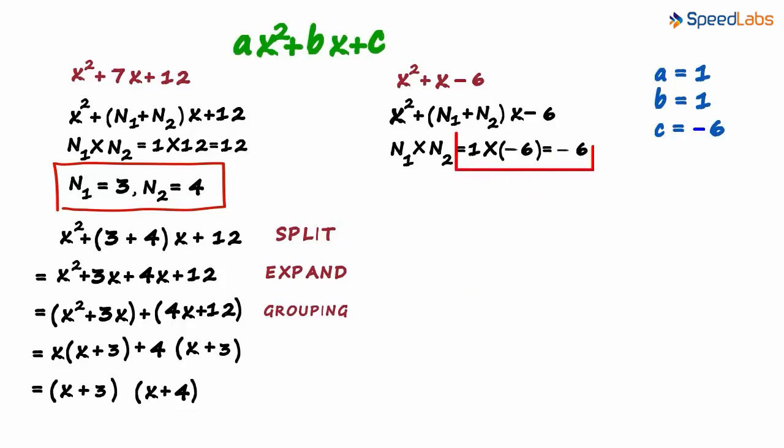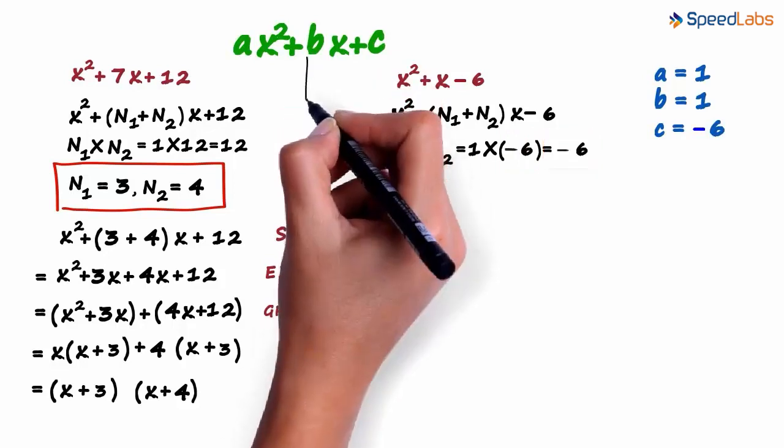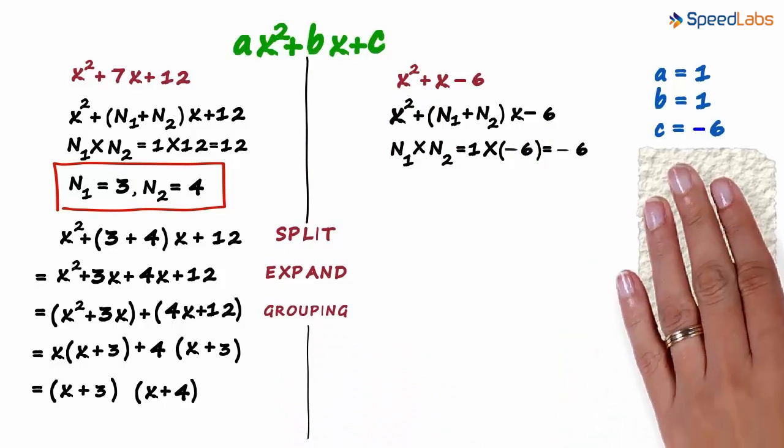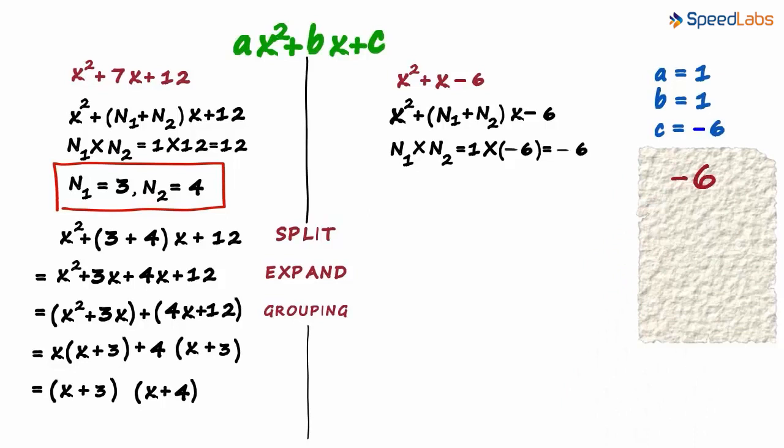Think about it. Two numbers whose product is minus 6 and whose sum is 1. Let us draw a line here first to show that we are looking at two different examples. On a scratch paper, let's try writing minus 6 as a product of two numbers.